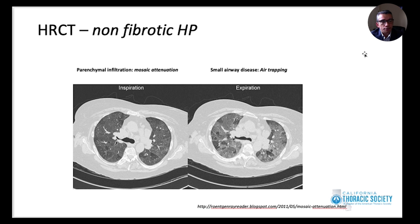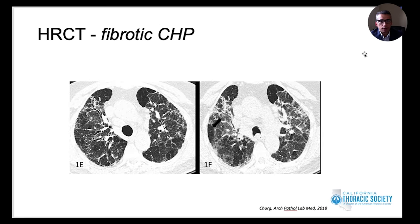When the film is taken in the expiratory phase, areas of mosaic attenuation and hypolucency become exaggerated, suggesting small airway disease with air trapping during expiration. As the disease progresses and becomes fibrotic, there are more reticulations, fibrosis, and architectural distortions. Advanced fibrotic HP can almost mimic other fibrotic ILDs like IPF, though areas of air trapping may still be visible.